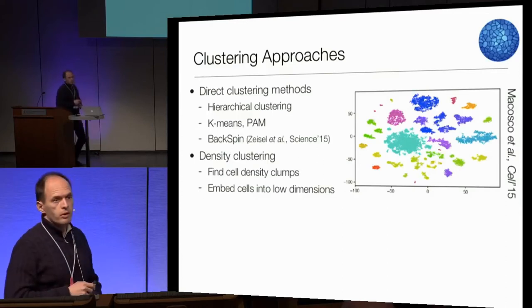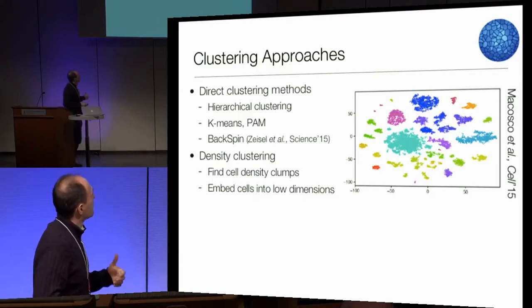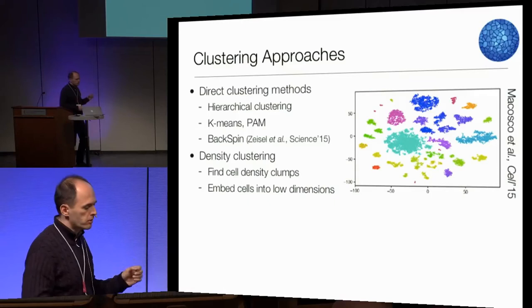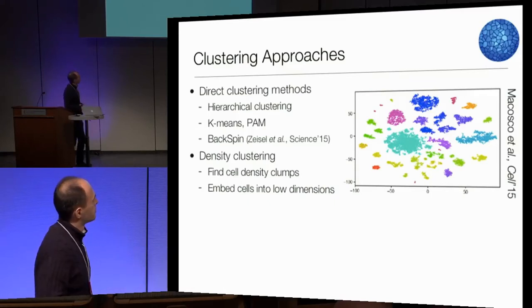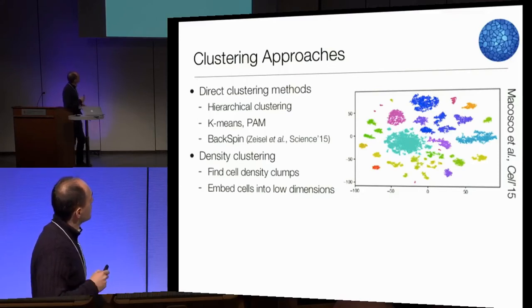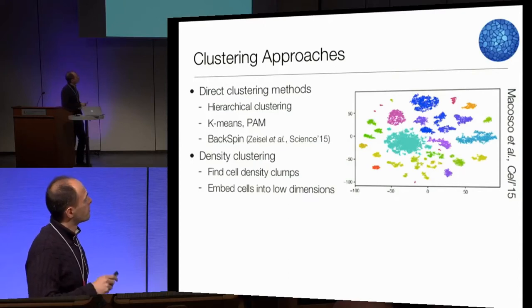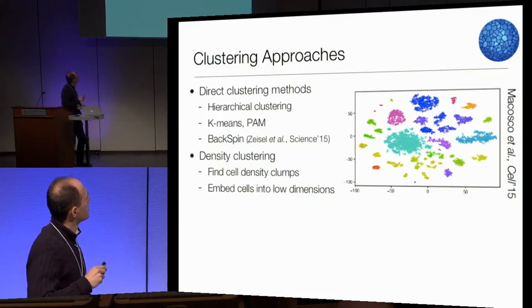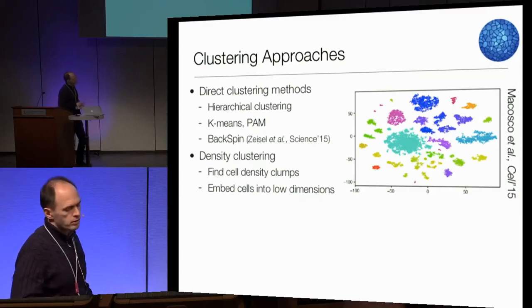A separate approach is density clustering. The idea is simple: you look for positions in space where there are more cells than you would expect, find peaks of this density, and call that a cluster. This is typically done in low-dimensional space. From Avi Regev's lab, this is the initial application of Seurat, using a t-SNE projection. You could project to some other low-dimensional space; in principle you could estimate density in high-dimensional space as well.